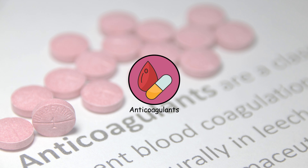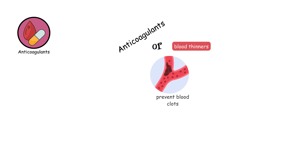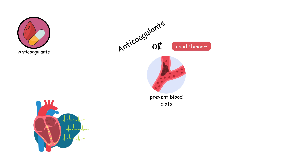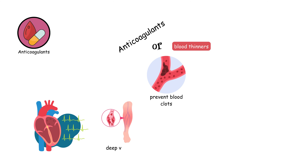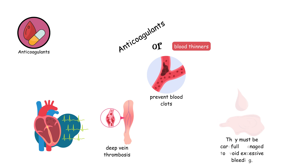Anticoagulants, or blood thinners, prevent blood clots. They are used in conditions like atrial fibrillation and deep vein thrombosis. They must be carefully managed to avoid excessive bleeding.